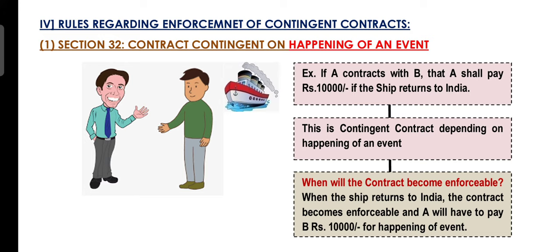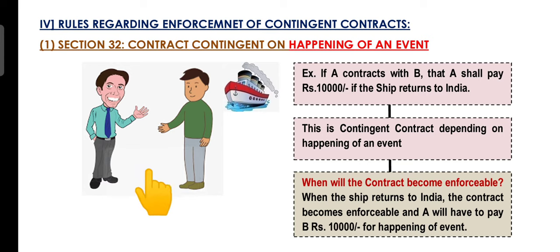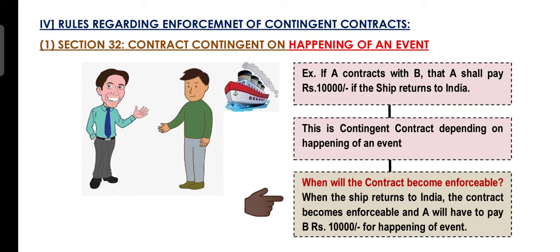Now let's understand the rules regarding enforcement of Contingent Contracts under Sections 32 to 36. Number 1: Section 32 deals with Contingent Contracts which depend on the happening of an uncertain event. When that event happens, the Contingent Contract becomes enforceable. For example, A has entered a contract with B that A will give 10,000 rupees when a certain event occurs — the contract is enforceable only when that event happens.